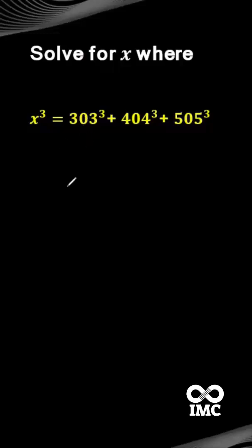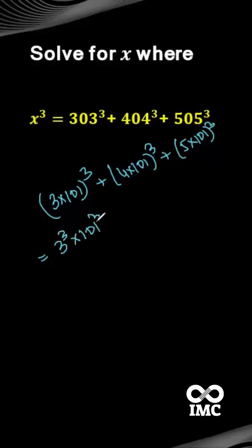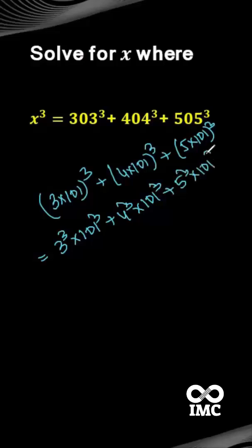Instead of 303 cube we can write 3 multiplied by 101 whole cube, plus 404 cube written as 4 multiplied by 101 whole cube, plus 505 cube written as 5 multiplied by 101 whole cube. Or equivalently, 3 cube multiplied by 101 cube, plus 4 cube multiplied by 101 cube, plus 5 cube multiplied by 101 cube.